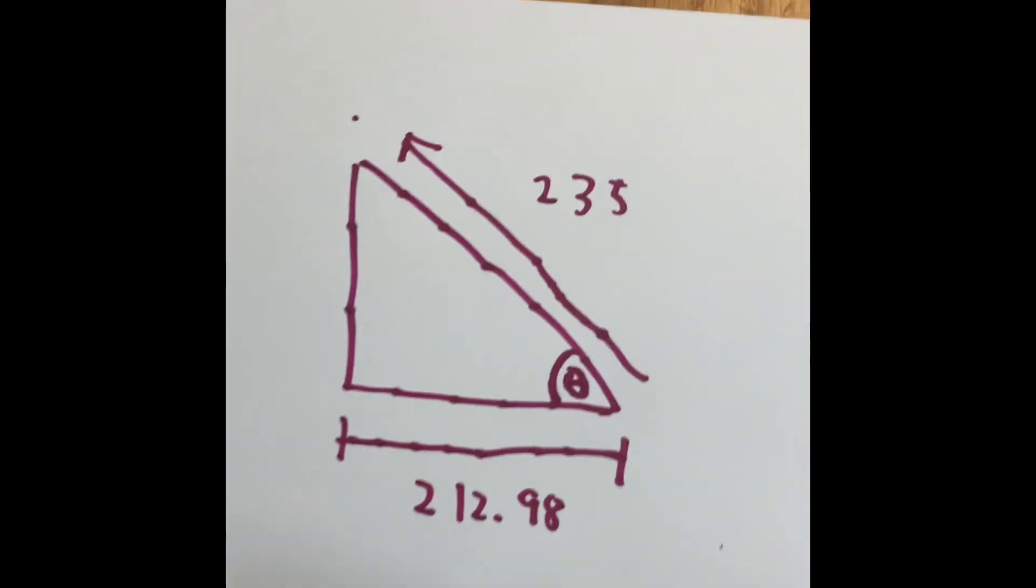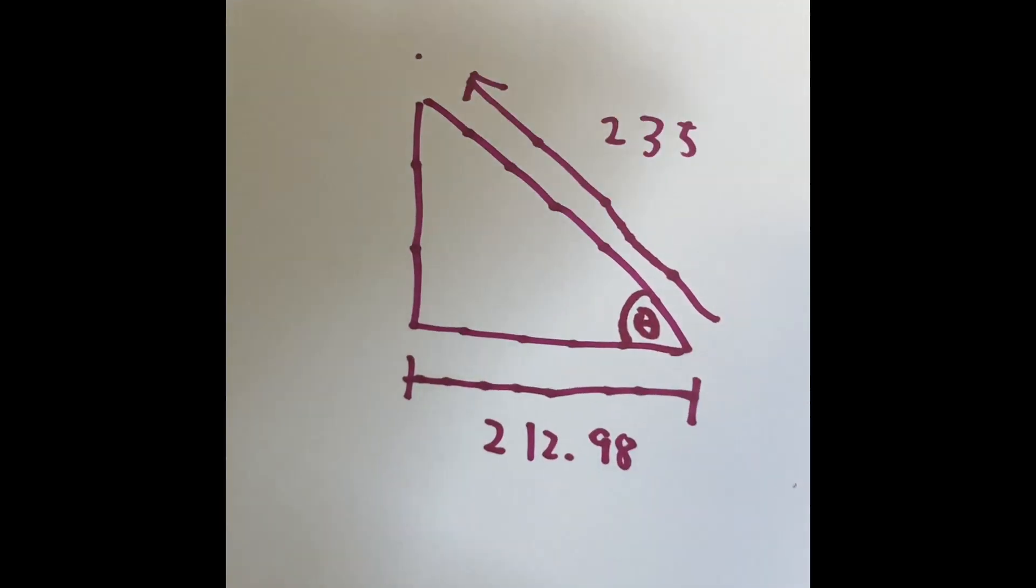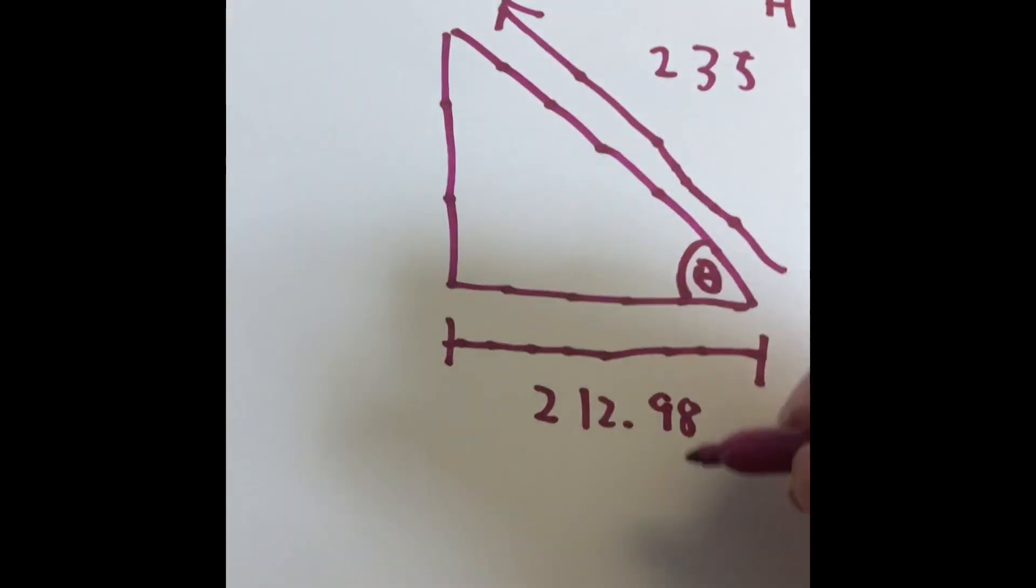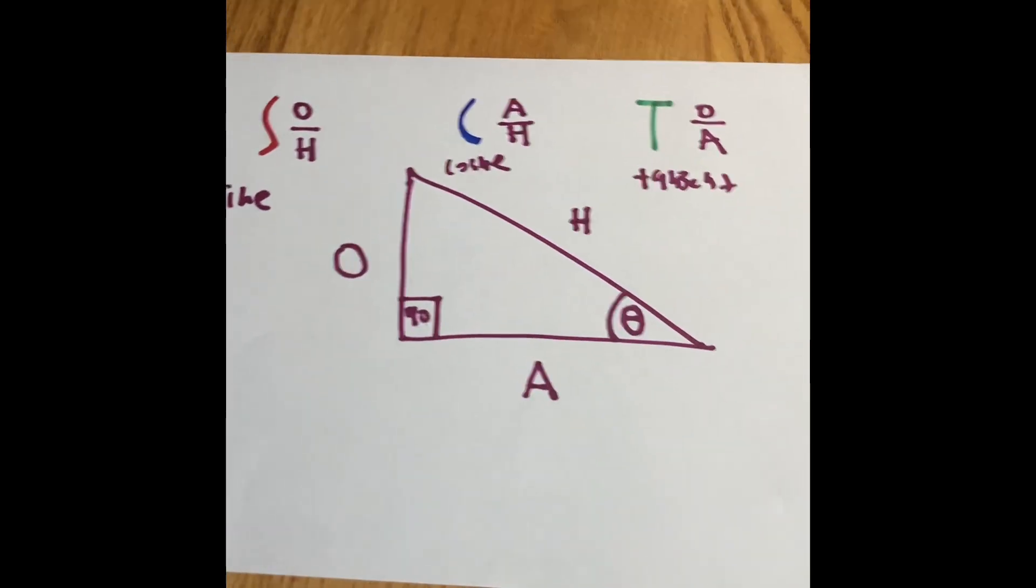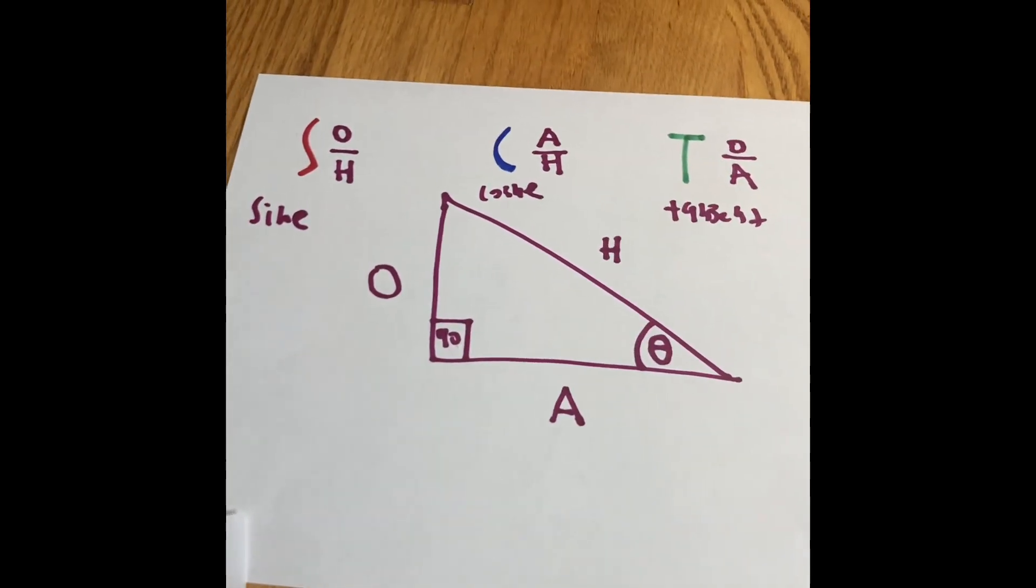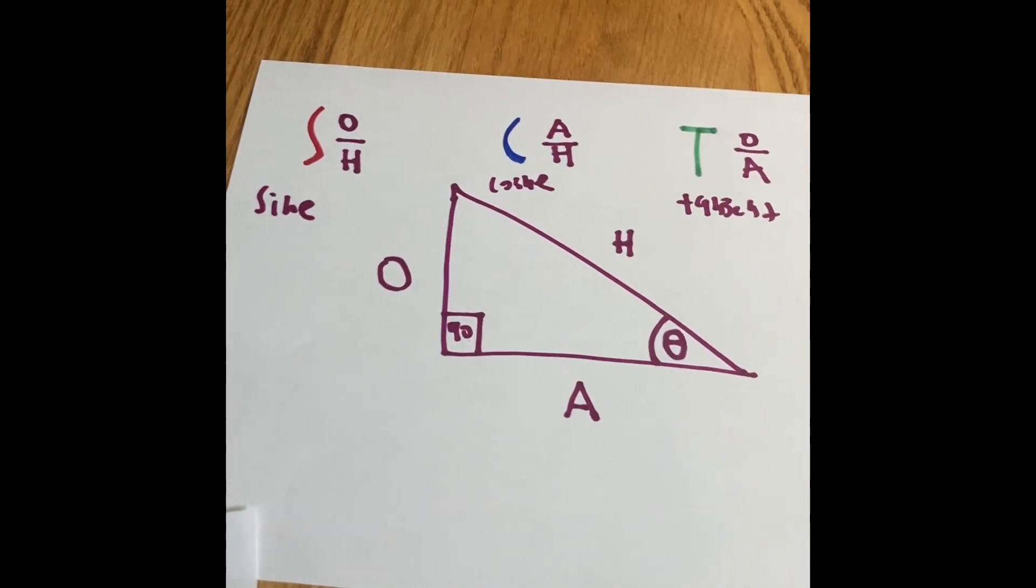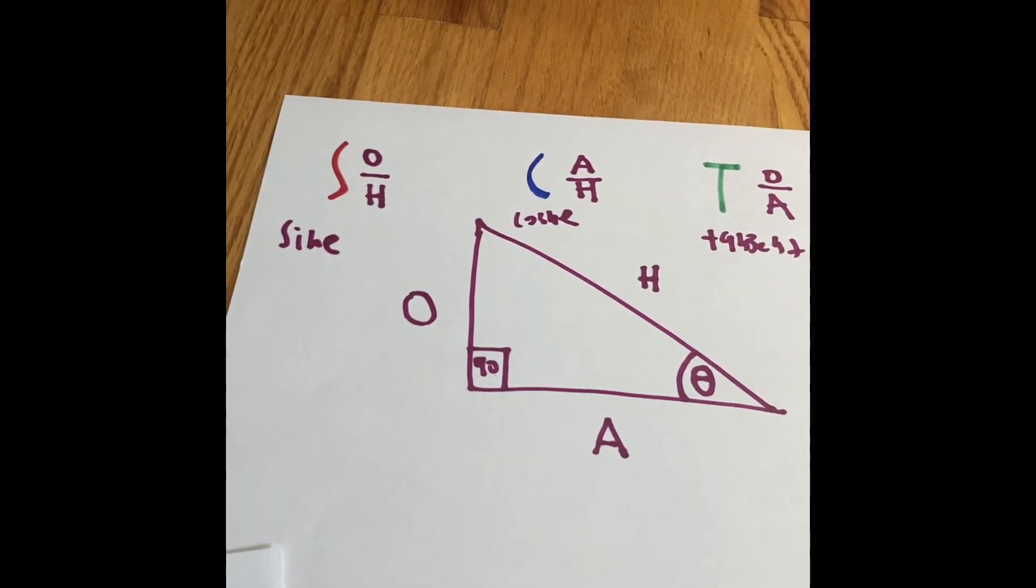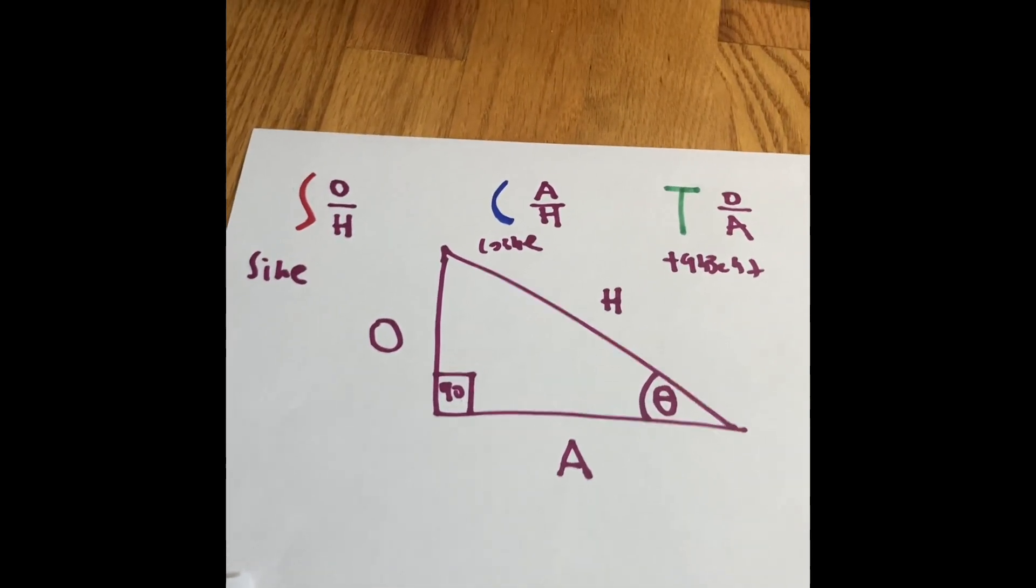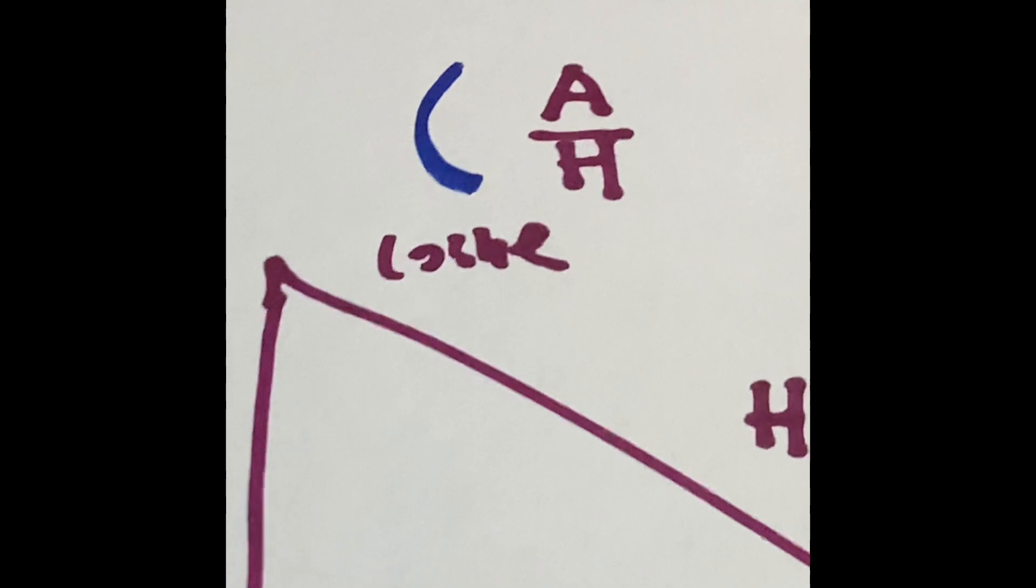So what do we have here? We have the hypotenuse and the adjacent. What of the three things can we use, or what of the three relationships of lines can we use to figure it all out? What has a hypotenuse and an adjacent? Yes, the cosine has one.